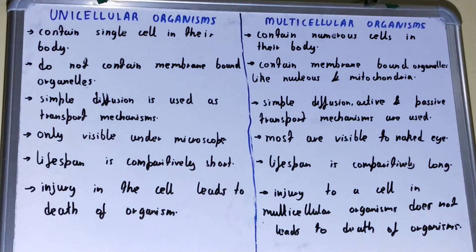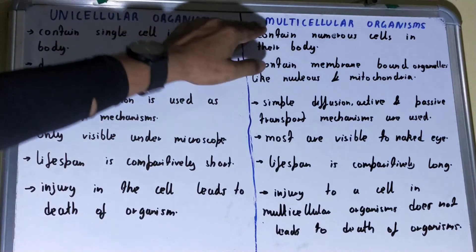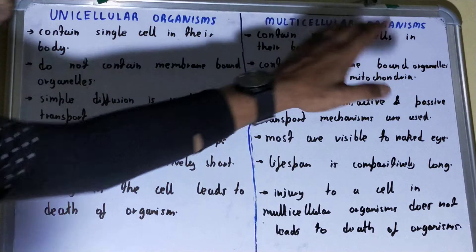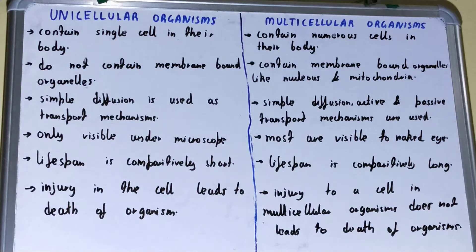Hello friends, in this video I will be helping with the difference between unicellular organisms and multicellular organisms. If you talk about the unicellular organisms, they contain a single cell in their body — one and only one cell. But if you talk about the multicellular organisms, they contain numerous or multiple cells in their body.